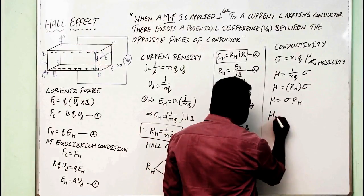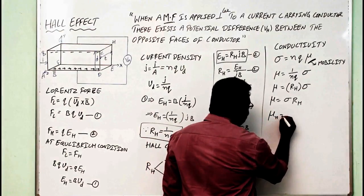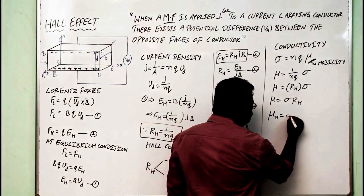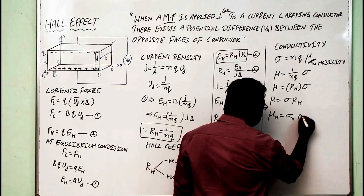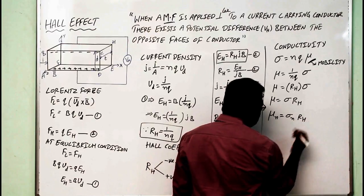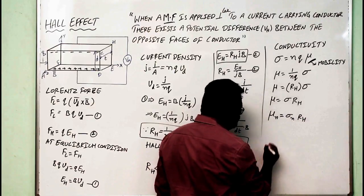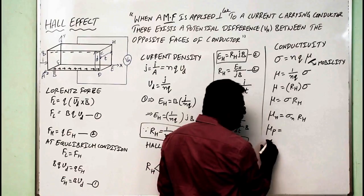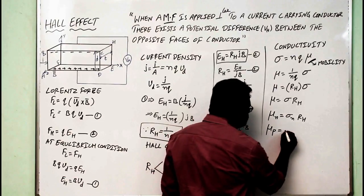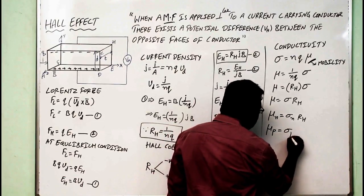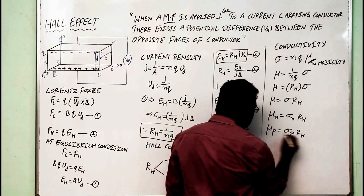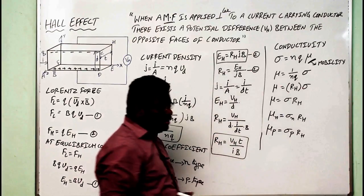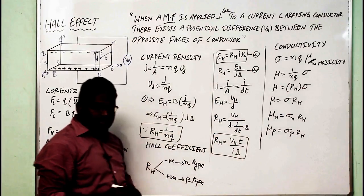For electrons, mu_N — the mobility of electrons — equals the conductivity of electrons multiplied by the Hall coefficient R_H. For holes, mu_P — the mobility of holes — equals the conductivity of holes times R_H. Like this, one can calculate the mobility of the carriers.